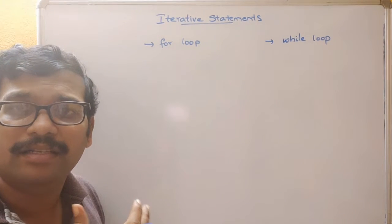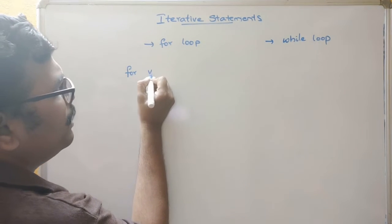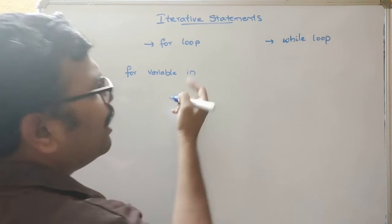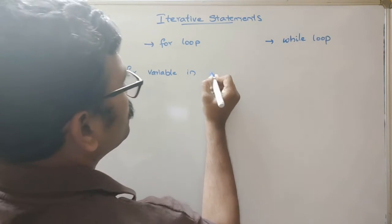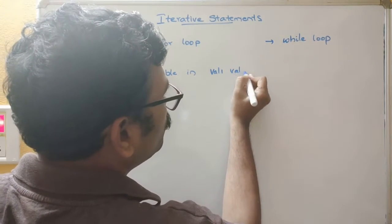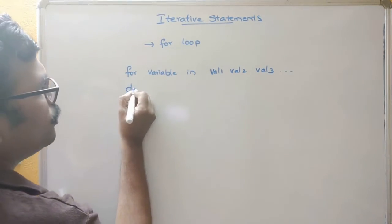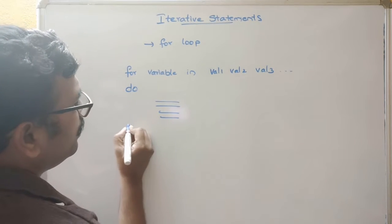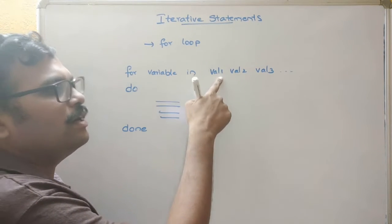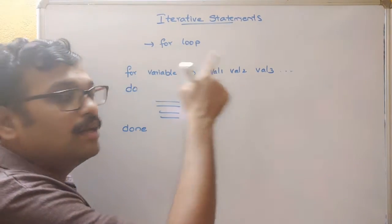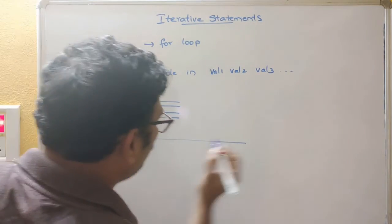Coming to the for loop, use the keyword 'for', then the loop variable, then 'in', followed by space-separated values: value1, value2, value3, and so on. After that use the keyword 'do', write down the statements, and then 'done'. The variable will hold value 1 in the first iteration, value 2 in the second iteration, value 3 in the third iteration, and so on.